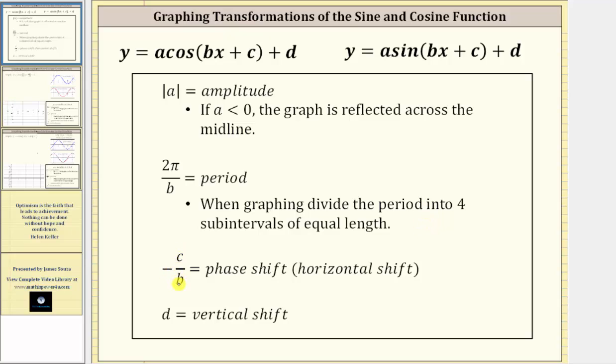Negative c divided by b is equal to the phase shift or horizontal shift. If the value is positive, the shift is right. If it's negative, the shift is left.